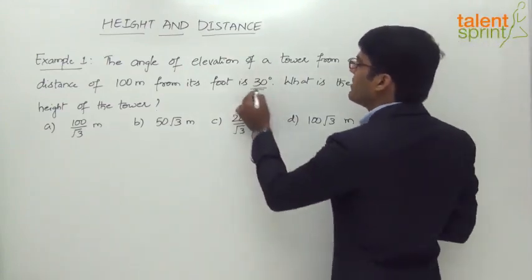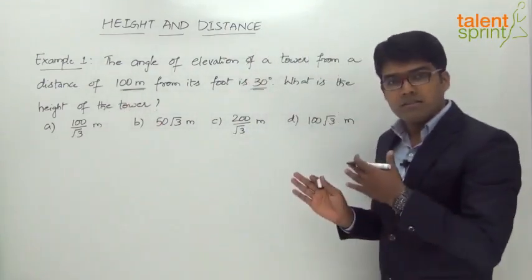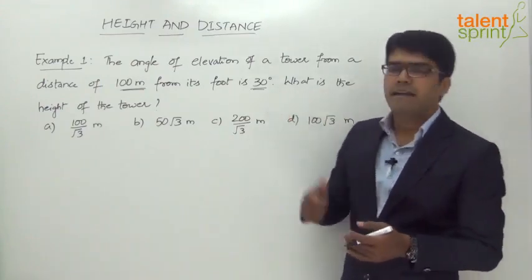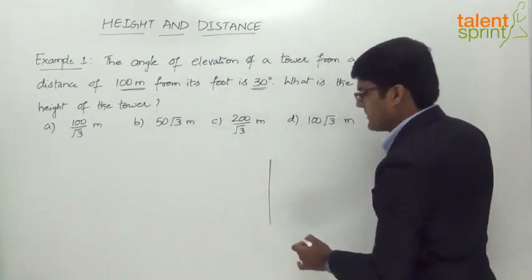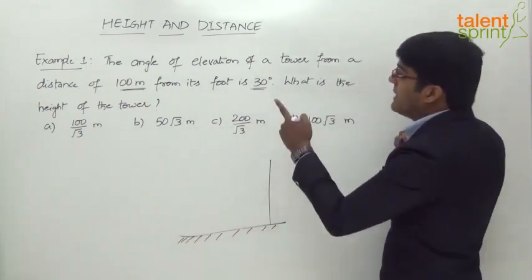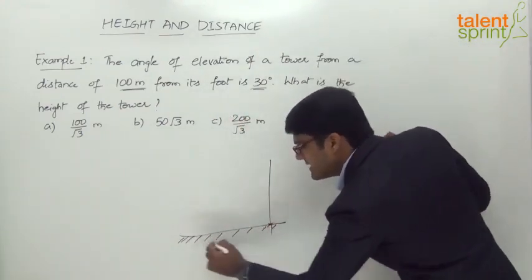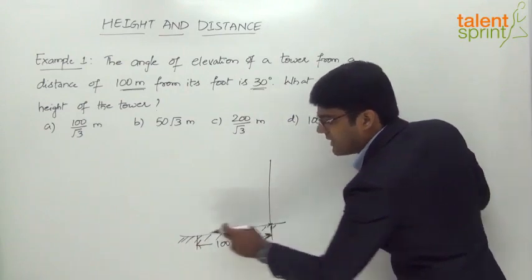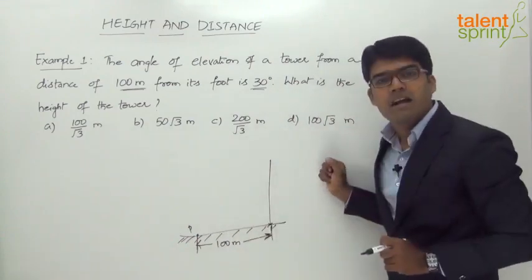The angle of elevation is 30 degrees, and we know the distance between the foot of the tower and the point from where it is being observed is 100 meters. We are required to find the height of the tower. Let us understand this with a simple diagram. This is the tower and here is the ground. The foot of the tower is at the base, and the point of observation P is 100 meters away from the foot.